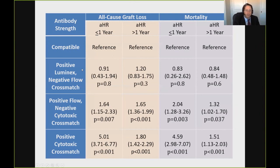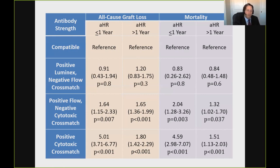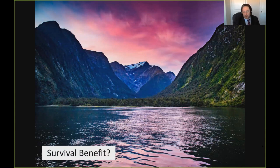So putting somebody through desensitization or an incompatible kidney transplant is risky, particularly when antibody strength is high. But the question is one of survival benefit — not how do they survive with the transplant, but how do they survive compared to their next best available options. We took 210 patients at Johns Hopkins through HLA incompatible desensitization, and compared them to others who waited on the waiting list. Desensitization far outperforms waiting for a compatible transplant — those who underwent desensitization had twice the survival.